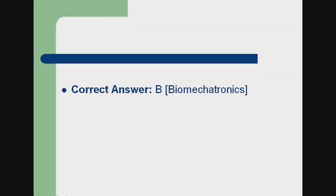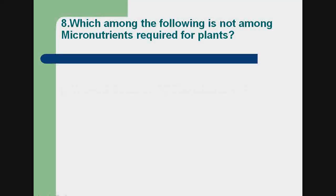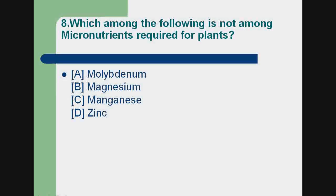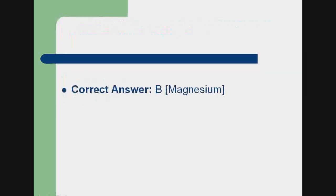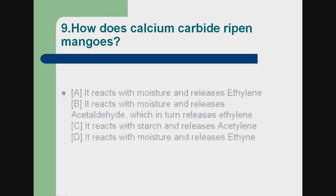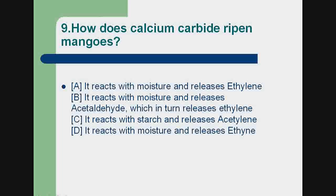Correct answer: b) biomechatronics. Question 8: Which among the following is not among the micronutrients required for plants? a) molybdenum, b) magnesium, c) manganese, d) zinc. Correct answer: b) magnesium.